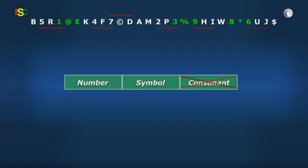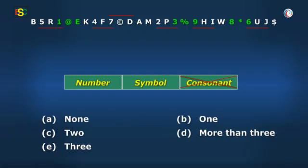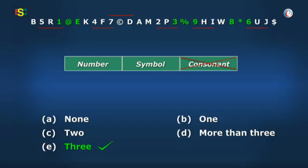And rejecting the triplet 6UJ as it is not in the sequence number, symbol, not consonant. Thus, there are a total of 3 triplets that are in the sequence N, S, not C. Hence, option E is the answer. Very good, Vidya.